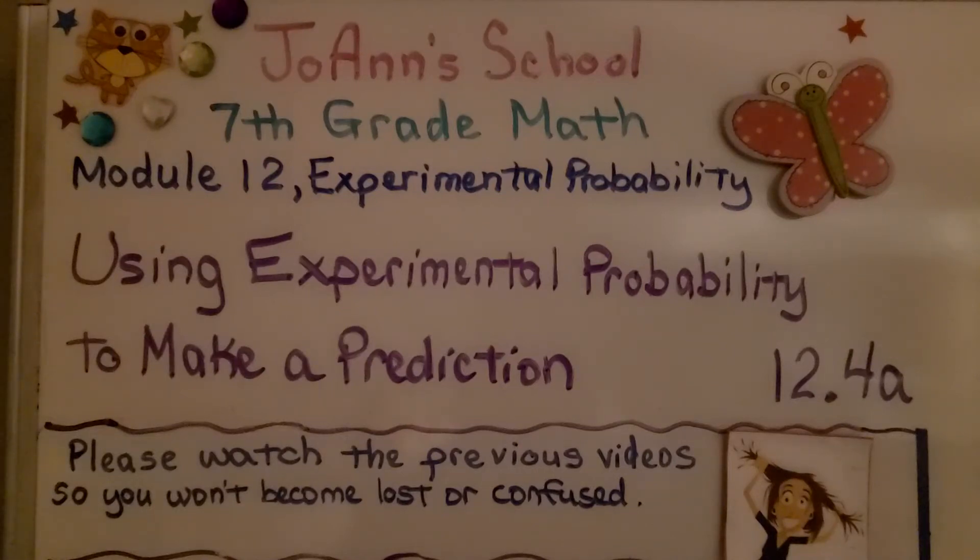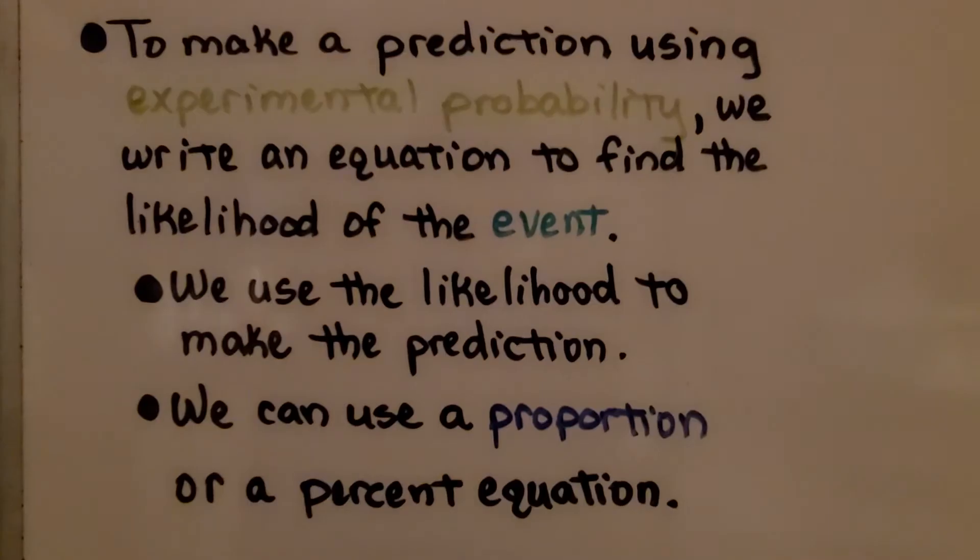Lesson 12.4a: Using Experimental Probability to Make a Prediction. To make a prediction using experimental probability, we write an equation to find the likelihood of the event. We use the likelihood to make the prediction. We can use a proportion or a percent equation.